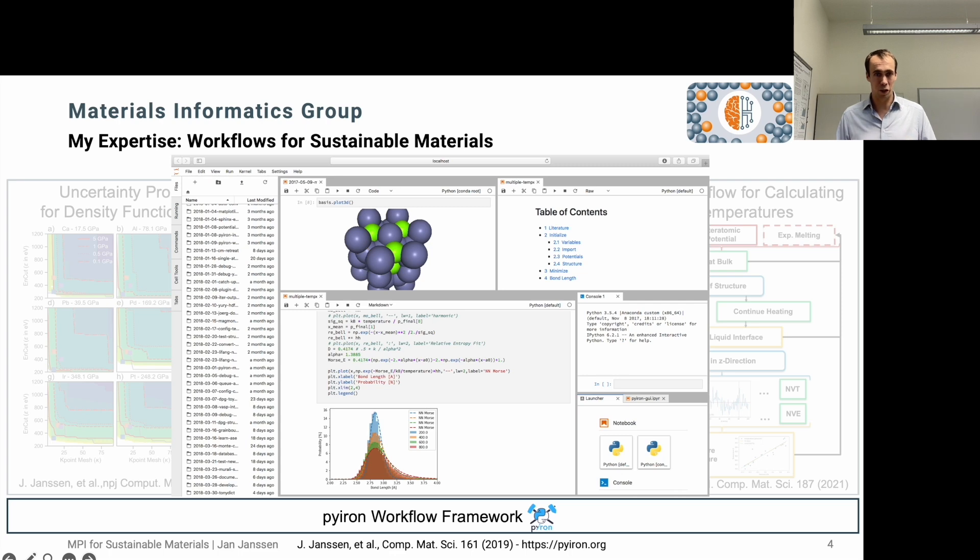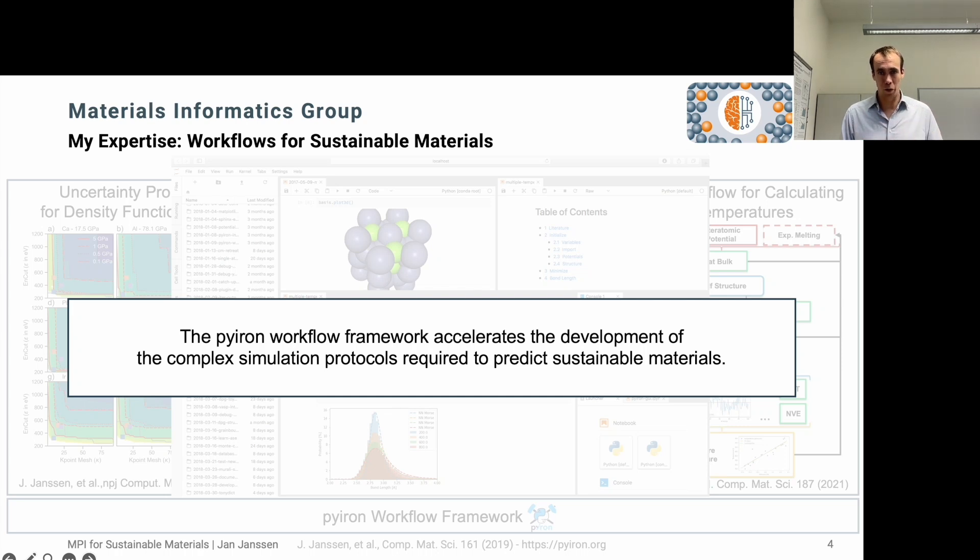With this, you have two advantages. On the one hand, we really have reproducibility. So if somebody asks you how did you calculate this figure, you can always go back and say this is the corresponding Jupyter notebook covering exactly all the steps. And secondly, we have this level of transferability, where you can use this Jupyter notebook, give it to a student, and they can continue the work just where we left. So the Pyiron framework really helped us to accelerate the development of these kind of complex simulation protocols that are required to predict sustainable materials.